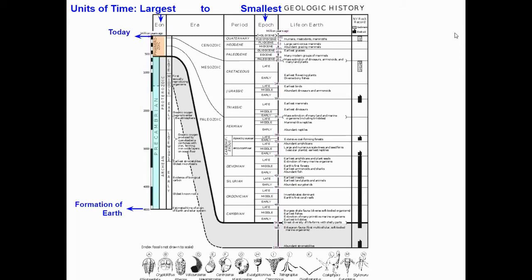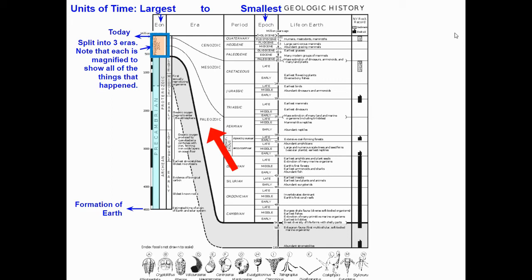The two boxes highlighted represent eons, and as you can see, all of Earth's history is represented by just two eons. The next timescale used is era — our second eon, Phanerozoic, is broken down into three eras: Paleozoic, Mesozoic, and Cenozoic. And that makes up the four major time zones of Earth's history.